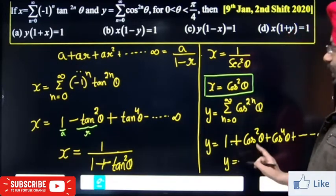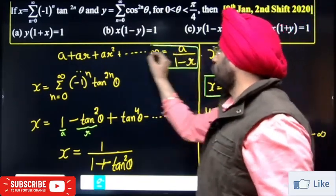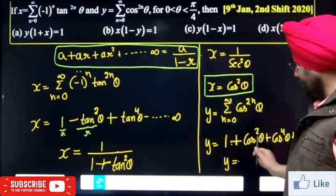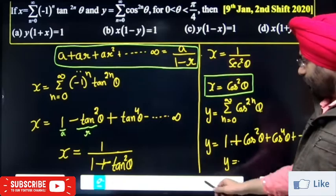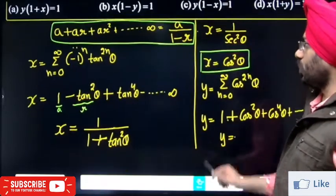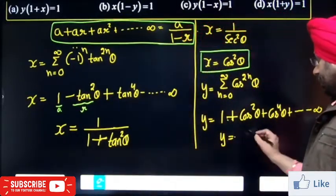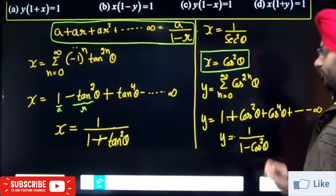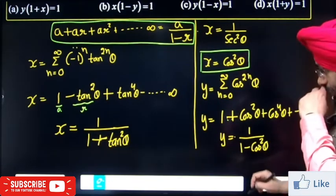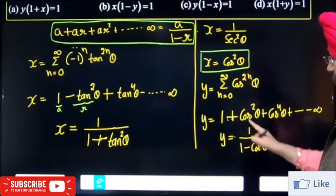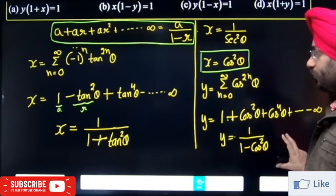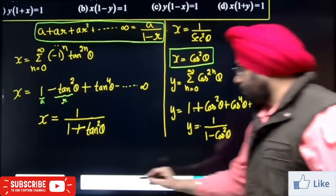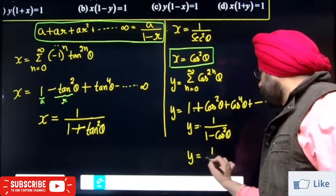Again this is a sum of infinite GP. Use the formula again: a is 1 and r is cos²θ (second term divided by first term). Applying the formula a upon 1 minus r, we get 1 upon 1 minus cos²θ. So Y is equal to 1 upon sin²θ.